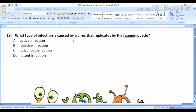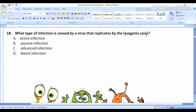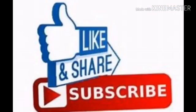Question 18: What type of infection is caused by a virus that replicates by the lysogenic cycle? Two cycles are there. Viruses cause lytic - it's a quick infection. Lysogenic cycle - it's a long-term infection. What type of infection is caused by a virus that replicates by the lysogenic cycle? Is it active infection, passive infection, advanced infection, or latent infection? It's latent infection. If you like the video, please don't forget to like, share, and subscribe in order to continue. Thank you.